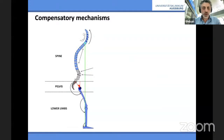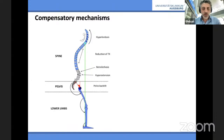If you look at it in a systematic way, you do have compensated mechanisms starting with the spine. The patient will try to maintain sagittal balance — will have lumbar hyperlordosis, thoracic kyphosis reduces, you have retrolisthesis and hyperextension in the lumbar spine. The pelvis tilts forward to enable more lumbar lordosis.